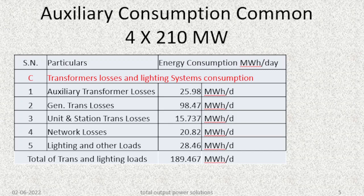There are also HT to LT conversion transformers. The auxiliary consumption for common systems of 4 x 210 MW includes auxiliary transformer losses, generator transformer, unit and station transformers, network losses, and other loads such as lighting. The total of the transformers and lighting loads was measured at around 189.467 MWh per day.